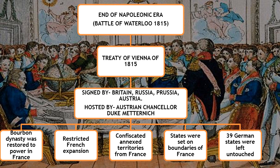As per this treaty, the Bourbon dynasty was restored to power in France — remember Louis XVI belonged to the Bourbon dynasty. They ensured France would not be allowed to expand further. Whatever territories were confiscated by France during Napoleon's rule were taken back. States were set on the boundaries of France to restrict its expansion, such as Netherlands. Notably, Napoleon had combined numerous states to create 39 German states, and those 39 states were left untouched.